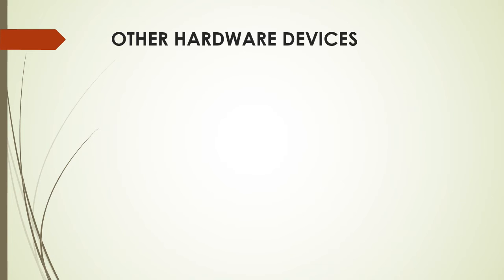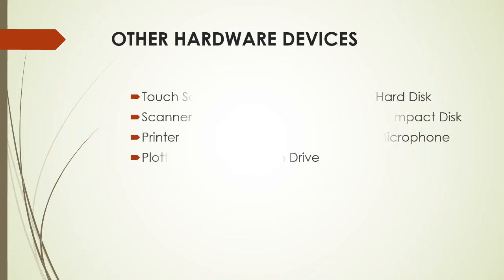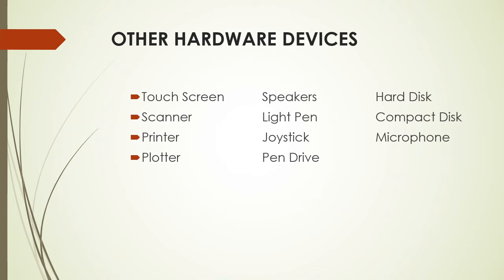Now we will see other hardware devices. These include touch screen, speakers, hard disk, scanner, light pen, compact disk, printer, joystick, microphone, plotter, and pen drive. We will see all these hardware devices individually with details.